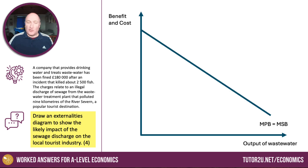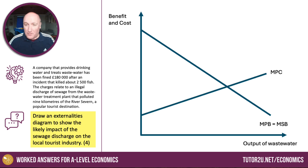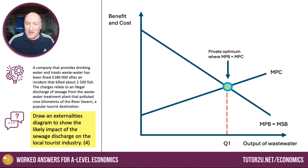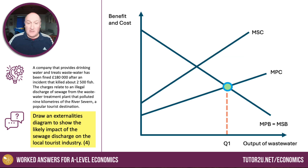Here's our private and social benefit curve. I'm assuming no externalities from consumption, so I'm focusing on production externalities here. And here's my upward sloping marginal private cost curve for the wastewater treatment business, the utility. In theory, the private optimum only considers the private costs and benefits of this activity. So the private optimum is Q1, where marginal private benefit equals marginal private cost. However, we know there are externalities — we're told about the fish being killed, the illegal pollution. So there is our externality on the diagram.